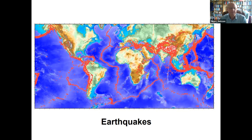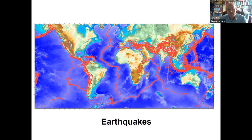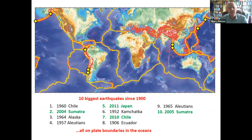In the oceans, earthquakes follow very narrow belts. We're all trained from childhood to join the dots, so you join them and those are the plate boundaries. Those yellow lines define the edges of the major plates, and away from those edges it's pretty quiet in the oceans — nearly all earthquakes are on those yellow lines.